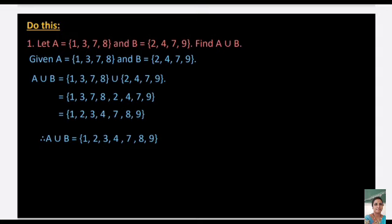Do this: A = {1, 3, 7, 8} and B = {2, 4, 6, 7, 9}. Find A ∪ B. The elements from both sets are 1, 3, 7, 8, 2, 4, 6, 9. Writing in ascending order: A ∪ B = {1, 2, 3, 4, 6, 7, 8, 9}. Note: when writing a union set, always arrange elements in ascending order and write common elements only once.